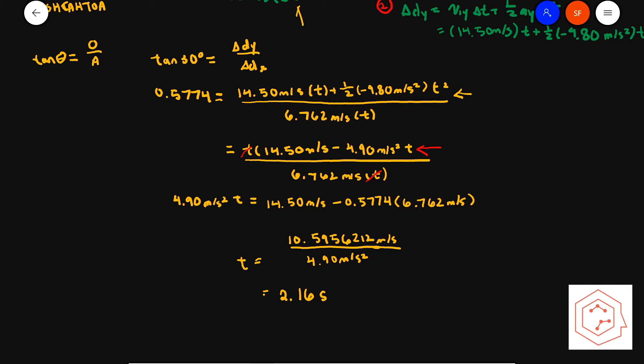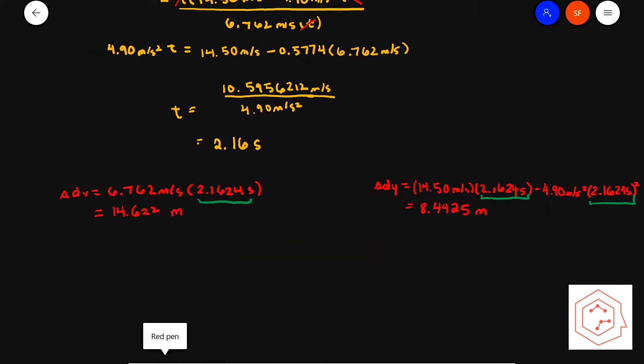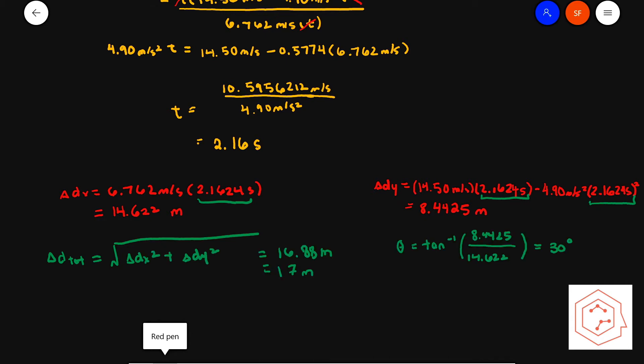Now that we have this time, we can plug it into our displacement equations for dx and dy. Solving with that time, you get the displacements in x and y to be 14.622 meters and 8.4425 meters respectively. The total displacement using the Pythagorean theorem — √(dx² + dy²) — gives you 16.88 meters, which rounds to 17 meters as there are two significant figures in the question.